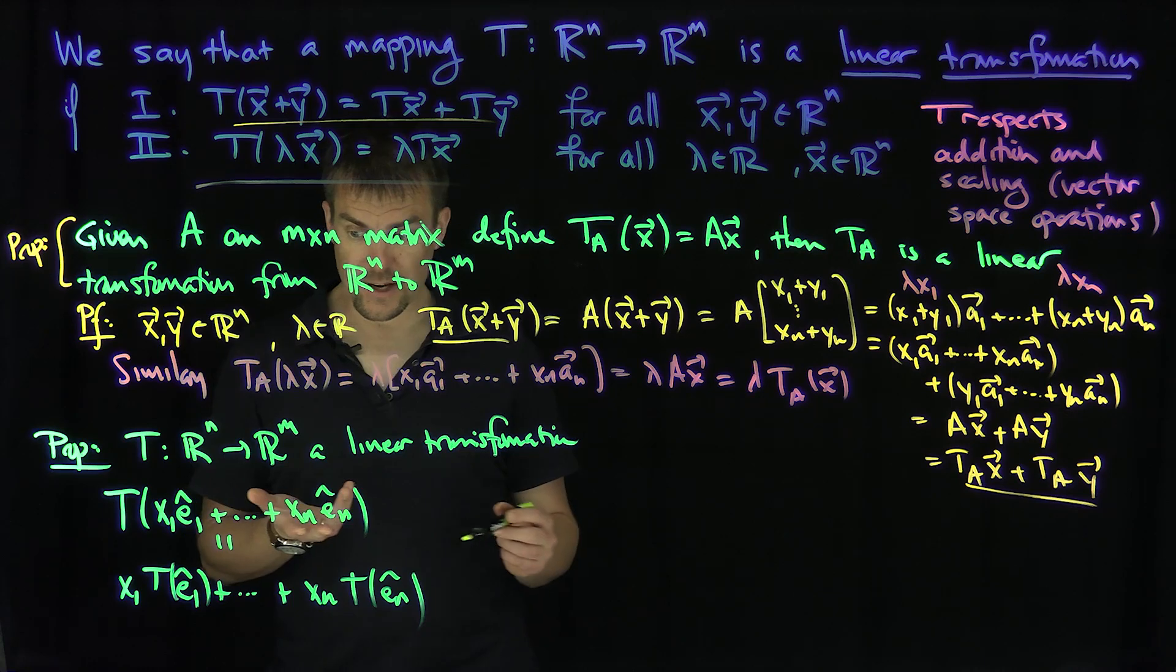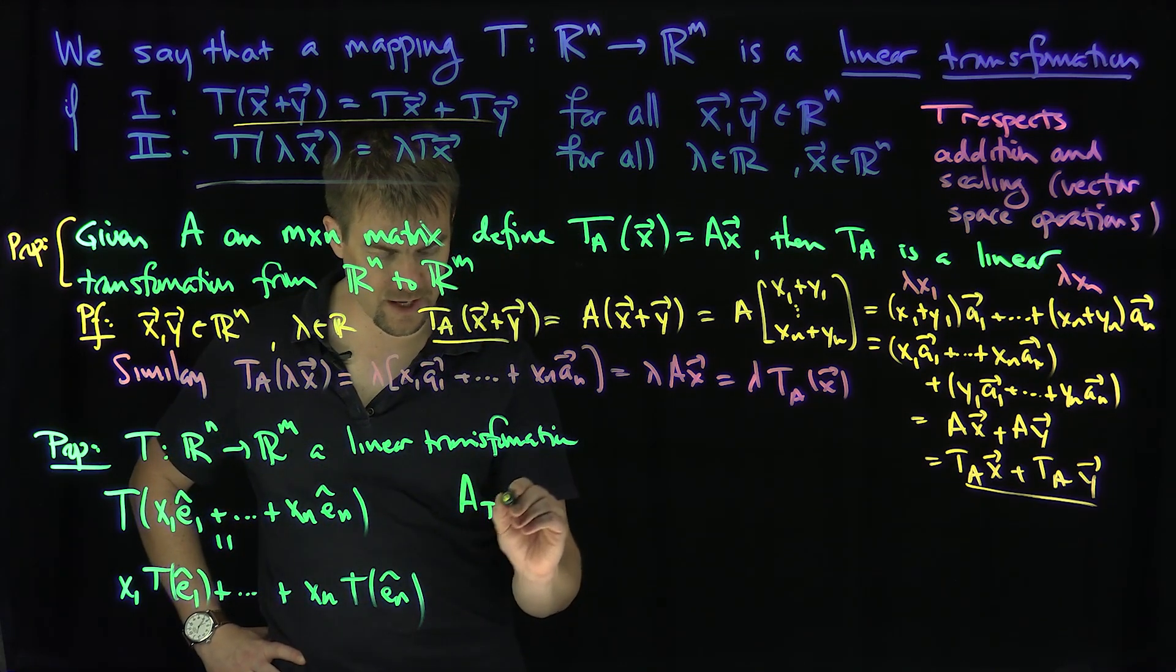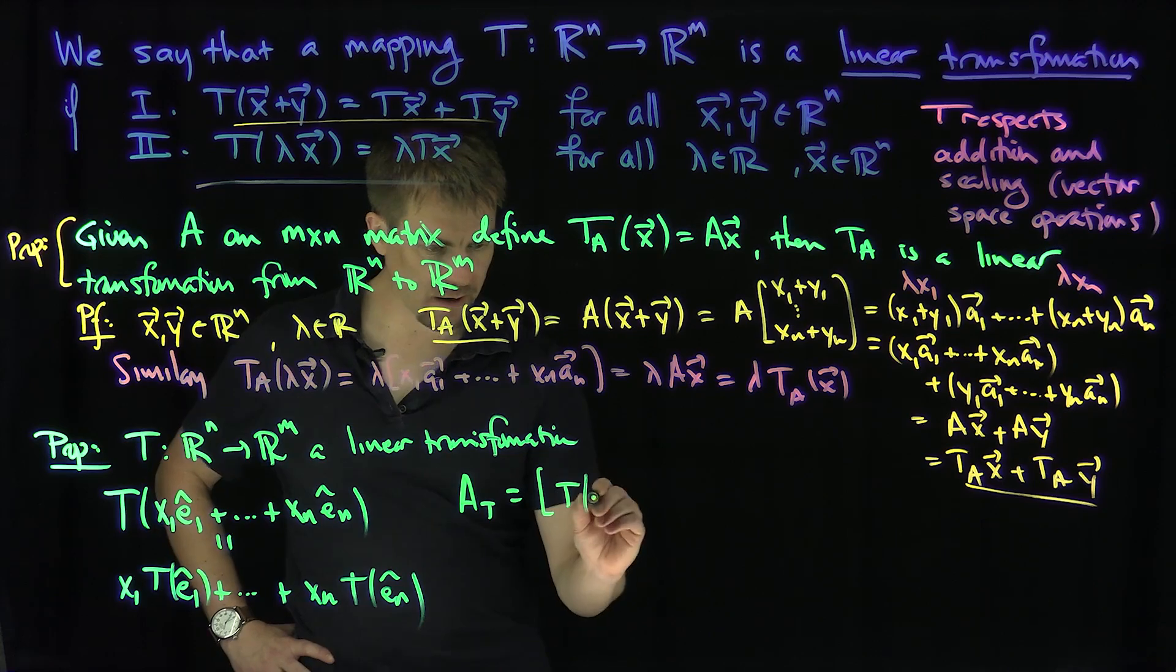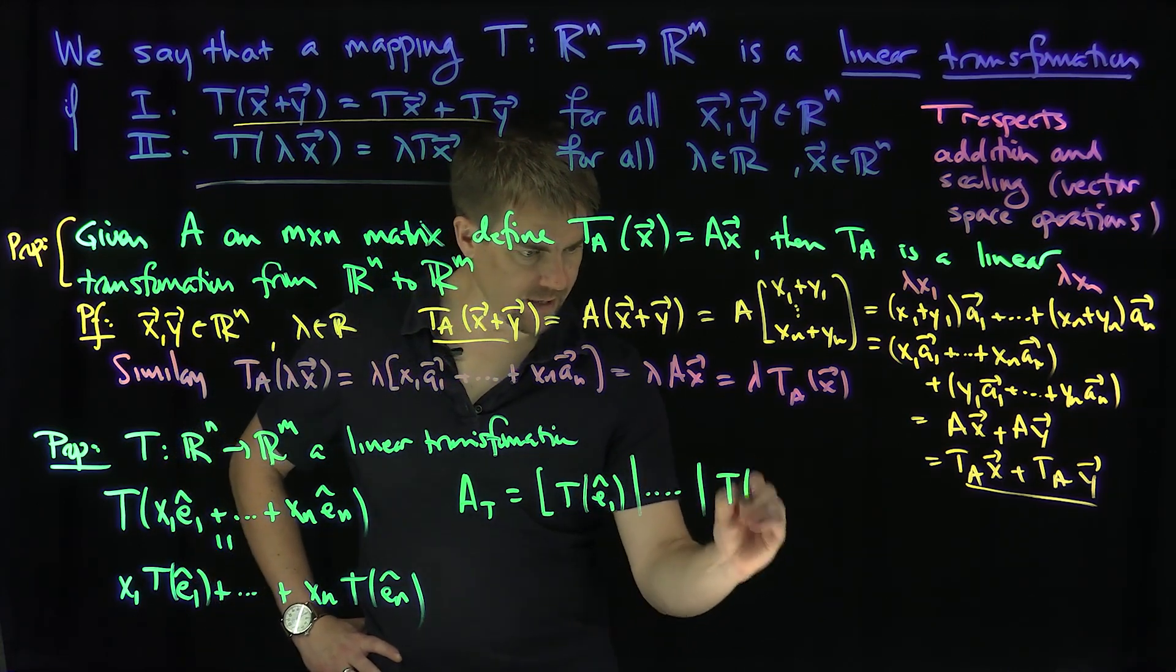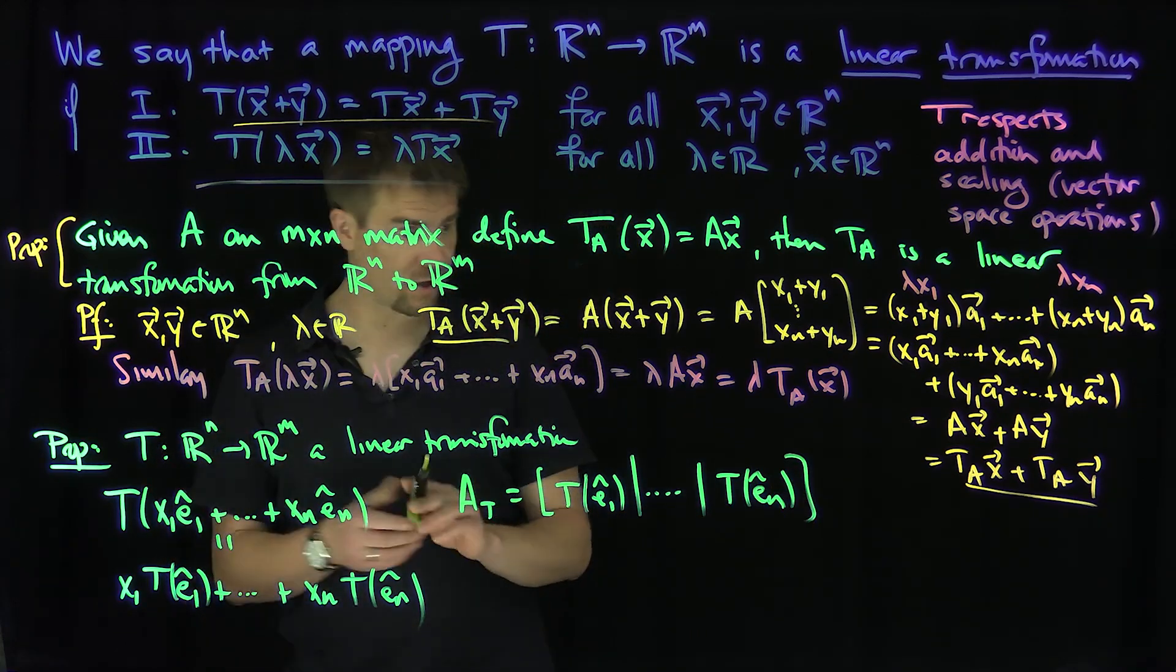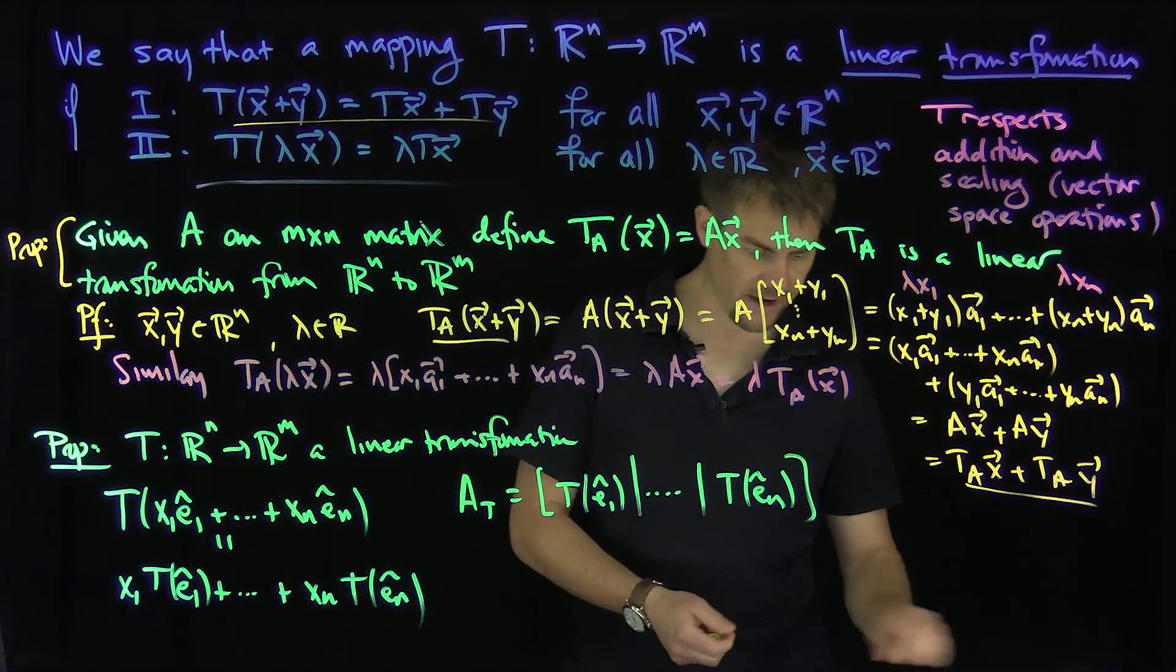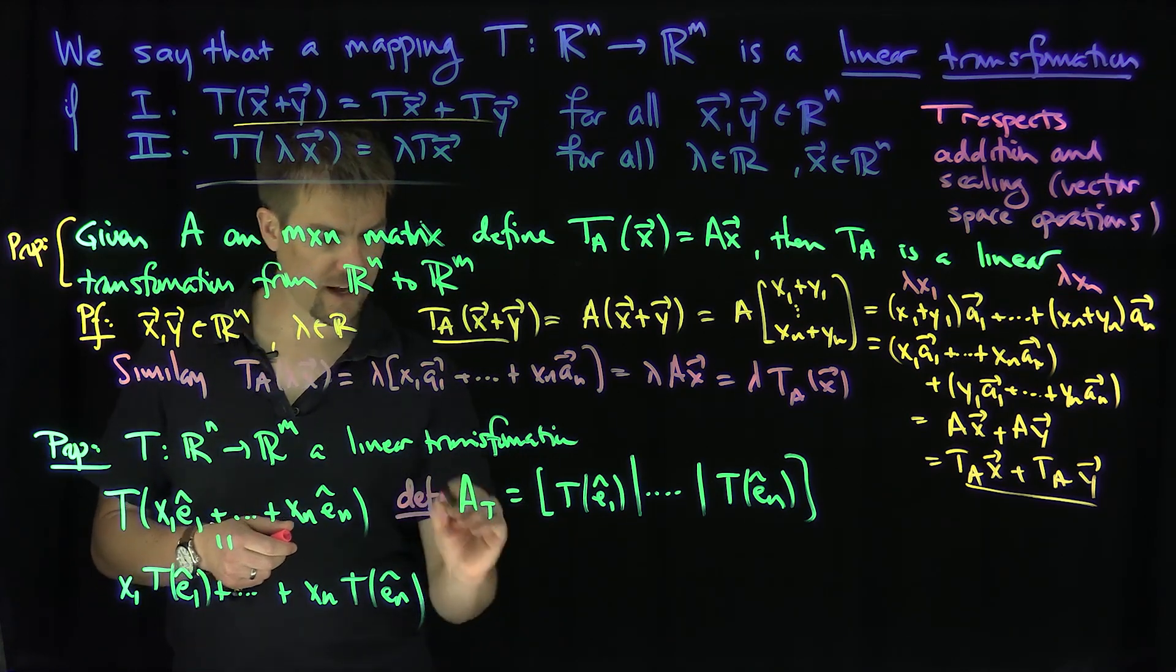Okay, well that's great because now what this says is that if I construct a matrix A, so I construct a matrix A that corresponds to T, being what? Being T of E_1 hat in the first column, T of E_n hat in the last column, then if this is my definition of A, if I define A in this way, so define A, define A_T in this way.